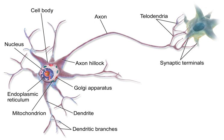Hebbian pairing of pre-synaptic and post-synaptic activity can substantially alter the dynamic characteristics of the synaptic connection and therefore either facilitate or inhibit signal transmission. In 1959, the neuroscientists Warren Sturgis McCulloch and Walter Pitts published the first works on the processing of neural networks.